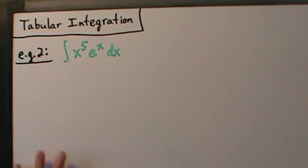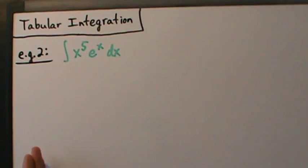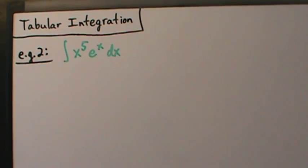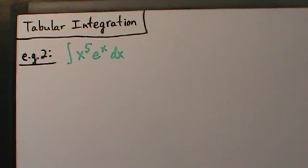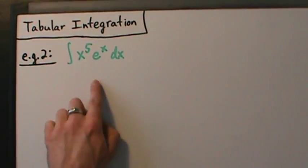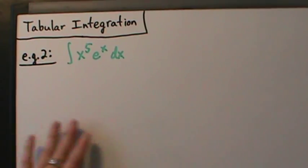In the last video we did example one, and we talked about what tabular integration is, sort of why it works, the way it works, how to set it up. So we'll skip a lot of those details here, but we'll go through all the details relevant for this problem. The first thing we want to do is set up our little table.